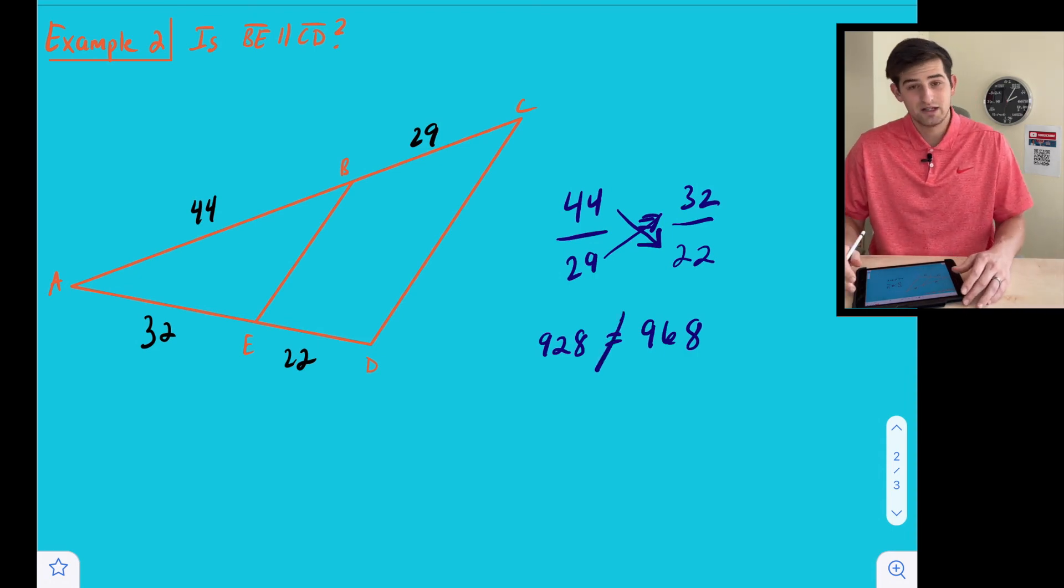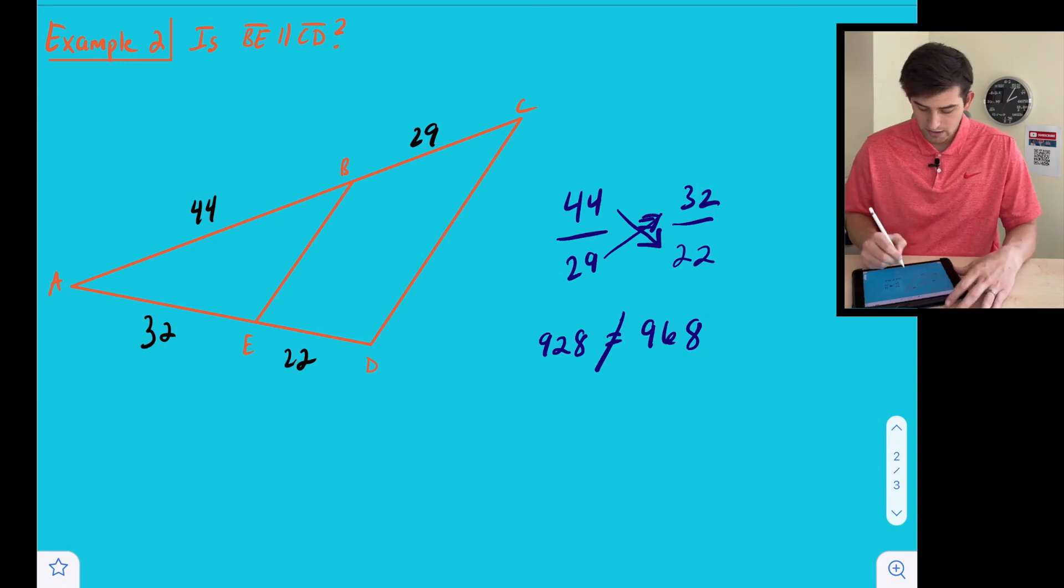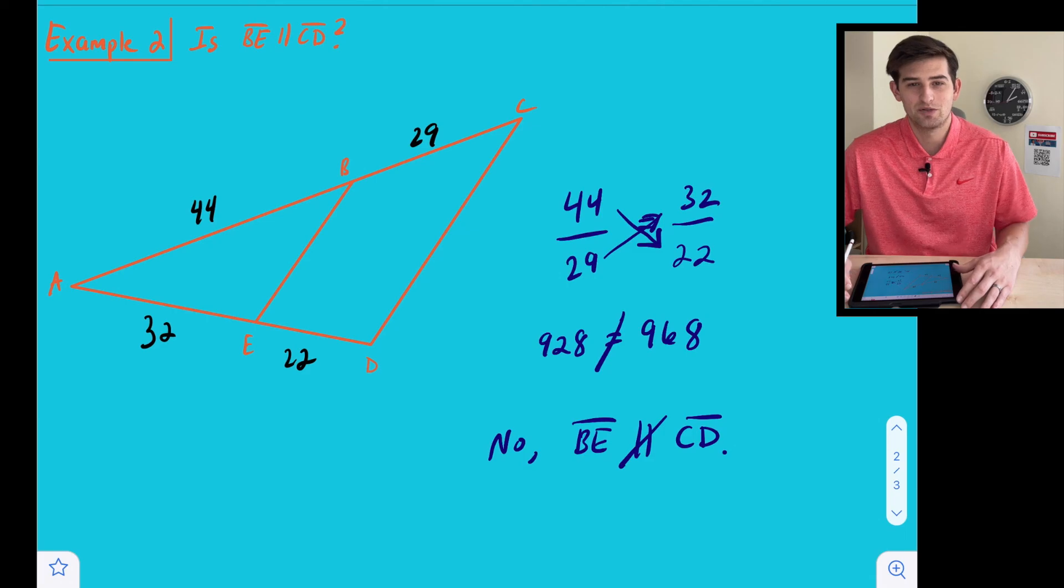So we draw our line through the equal sign because those are not equal to each other, and we can say no, segment BE is not parallel to segment CD. And that is the triangle proportionality theorem.